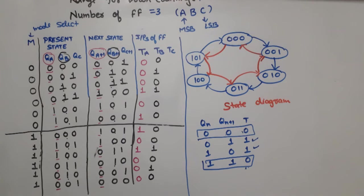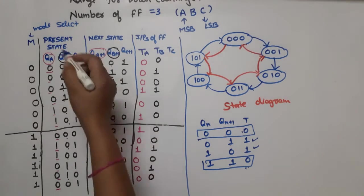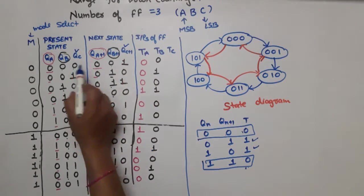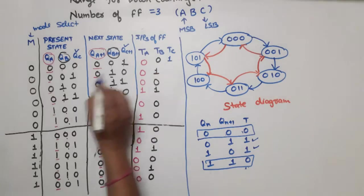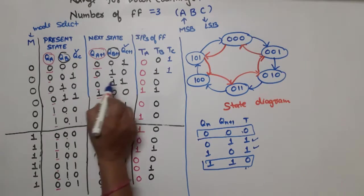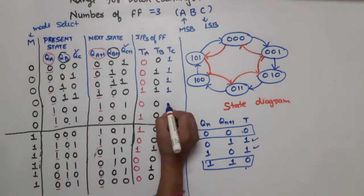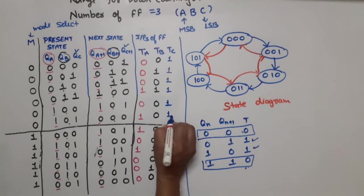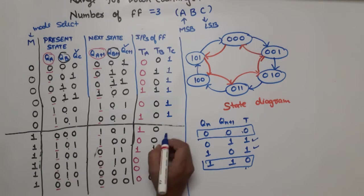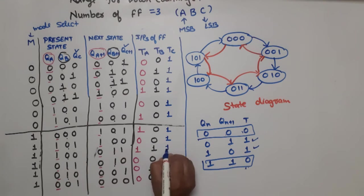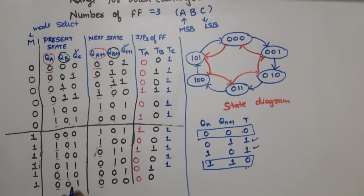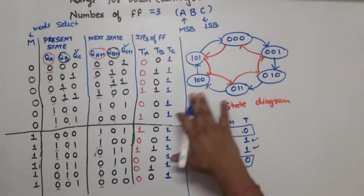Now we write TC values by observing QC and QC+1. The TC values are: 0→1 change means 1; 1→0 change means 1; 0→1 change means 1; 1→0 means 1; 1→0 means 1; toggling means 1. For down counting: 0→1 means 1; 1→0 means 1; 1→0 means 1; 0→1 means 1; 1→0 means 1; 1→0 means 1. This completes the state table.